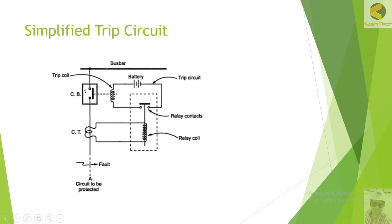The CT feeds a sensing device which is a relay. When there is a fault, a huge current flows due to the short circuit, which energizes the relay coil and operates its contact. When the contact operates, you can see there is a DC supply — this DC is forwarded to the trip coil. The trip coil then acts on the large mechanism and opens the breaker, i.e., opens the interrupter unit.